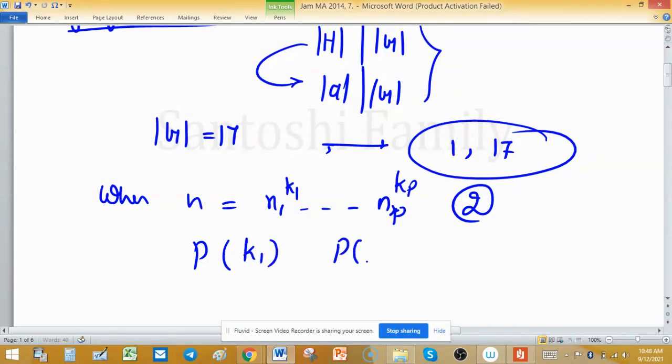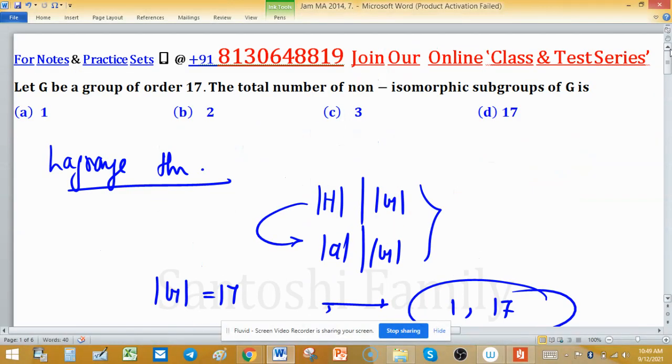So partition of k₁, partition of k₂, and so on. Whatever the possible partitions of the primes, add them up. This will give you the total number of non-isomorphic subgroups of G when n is composite number.